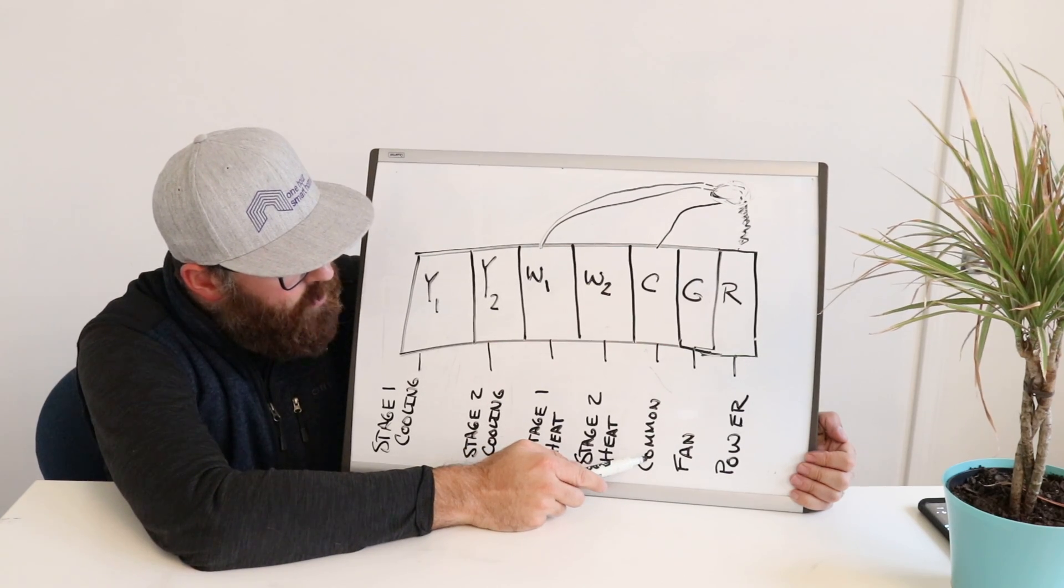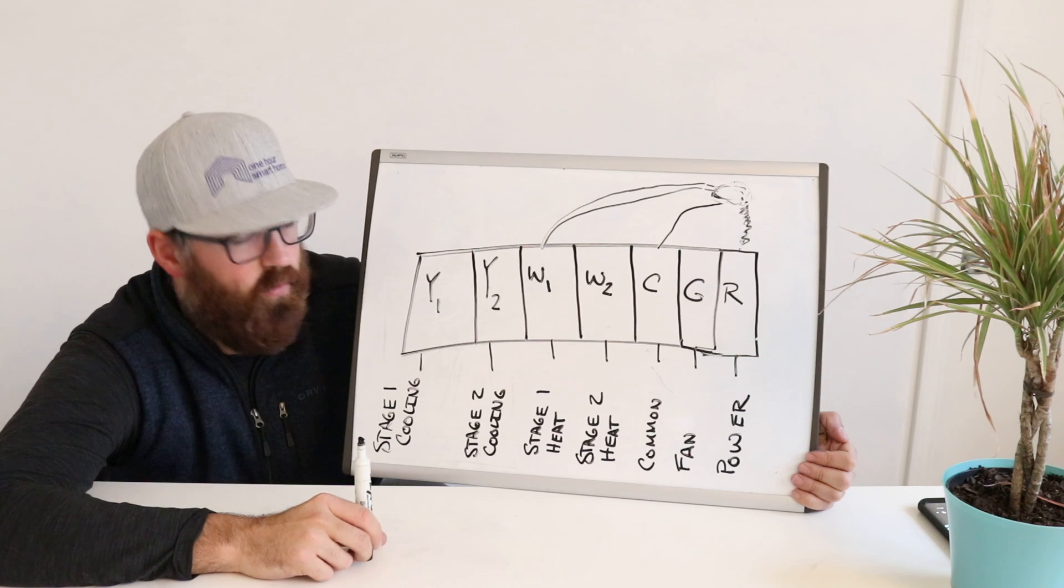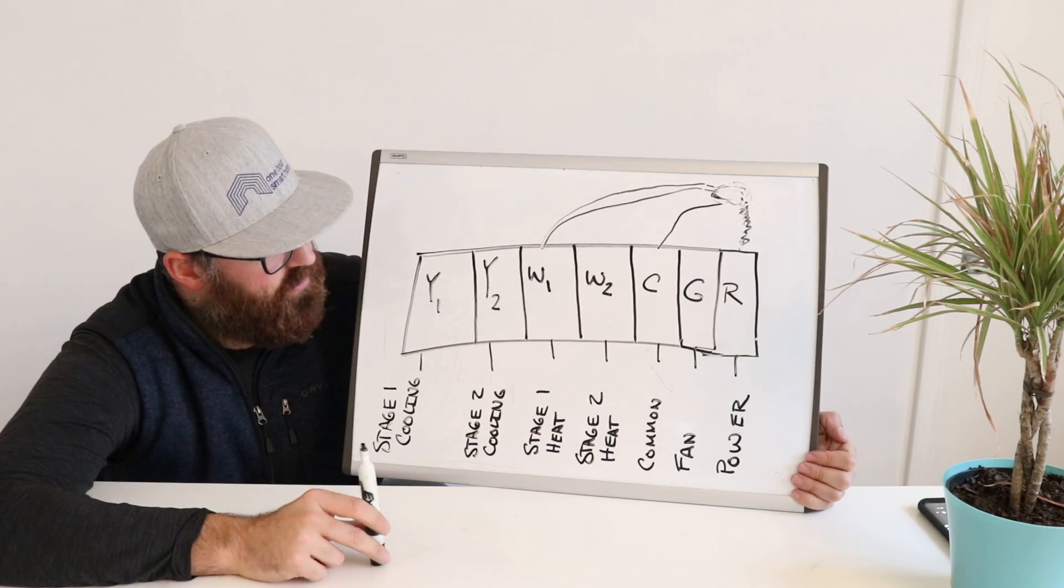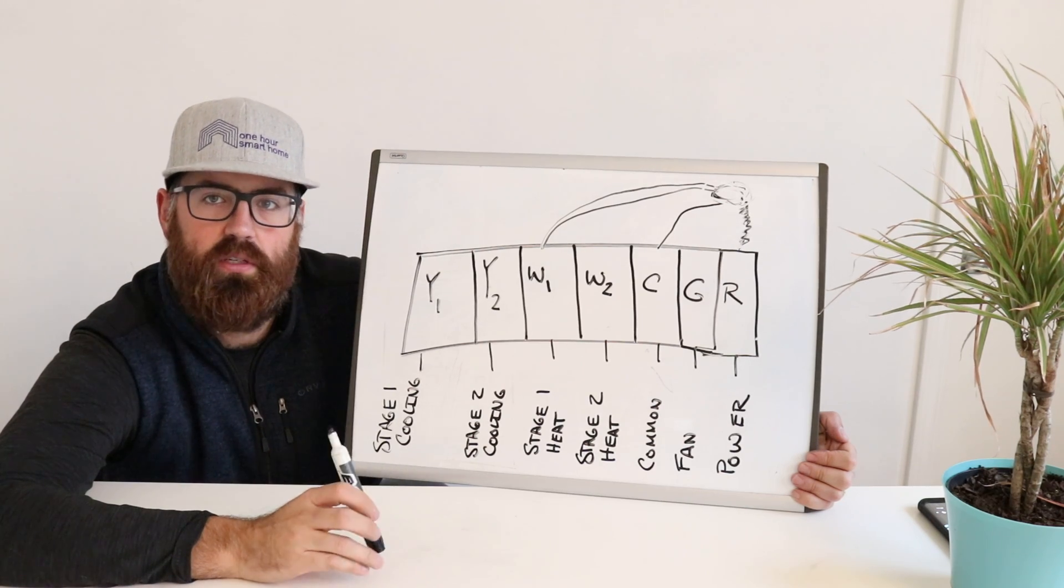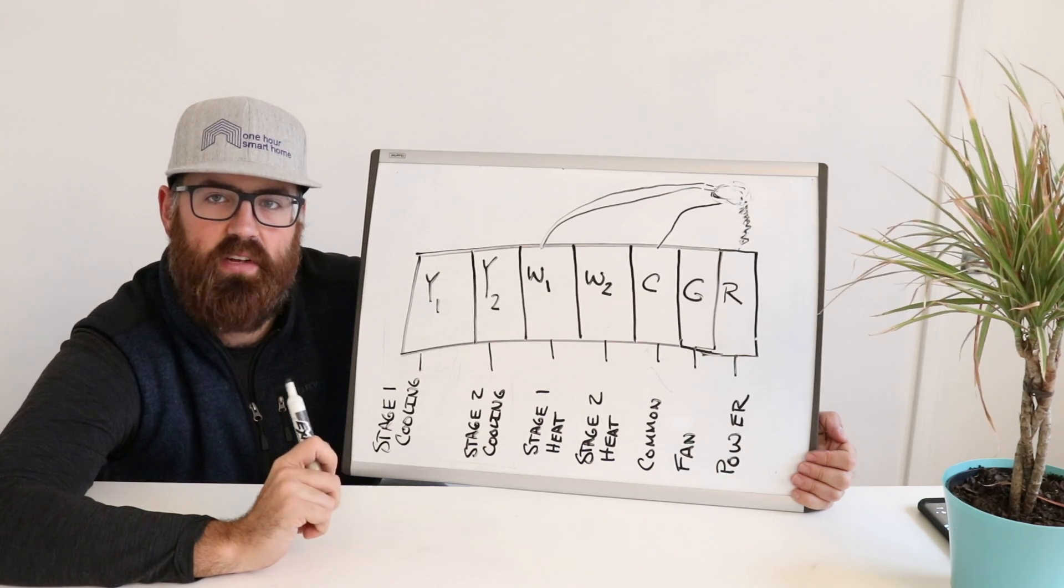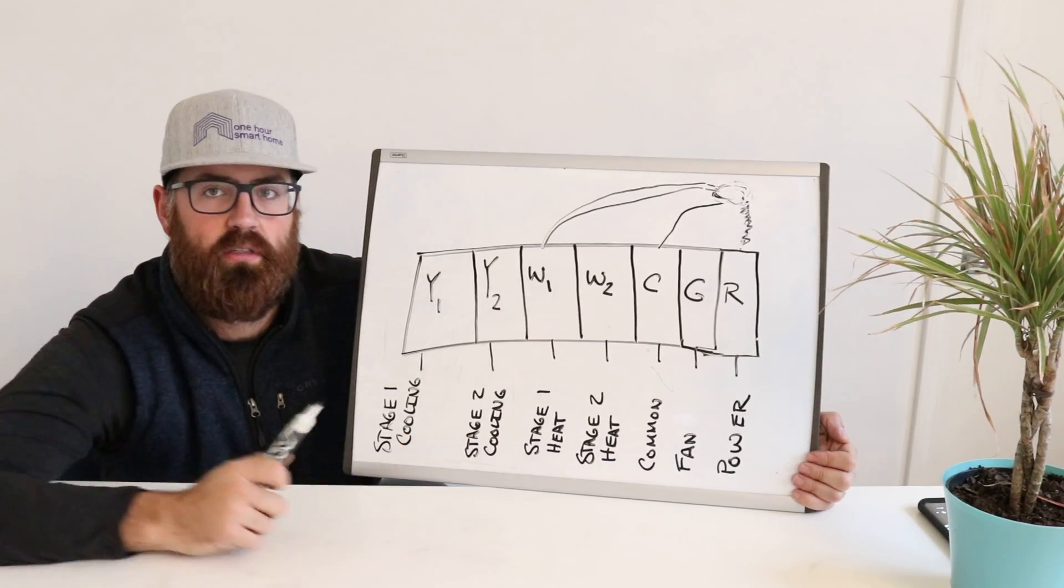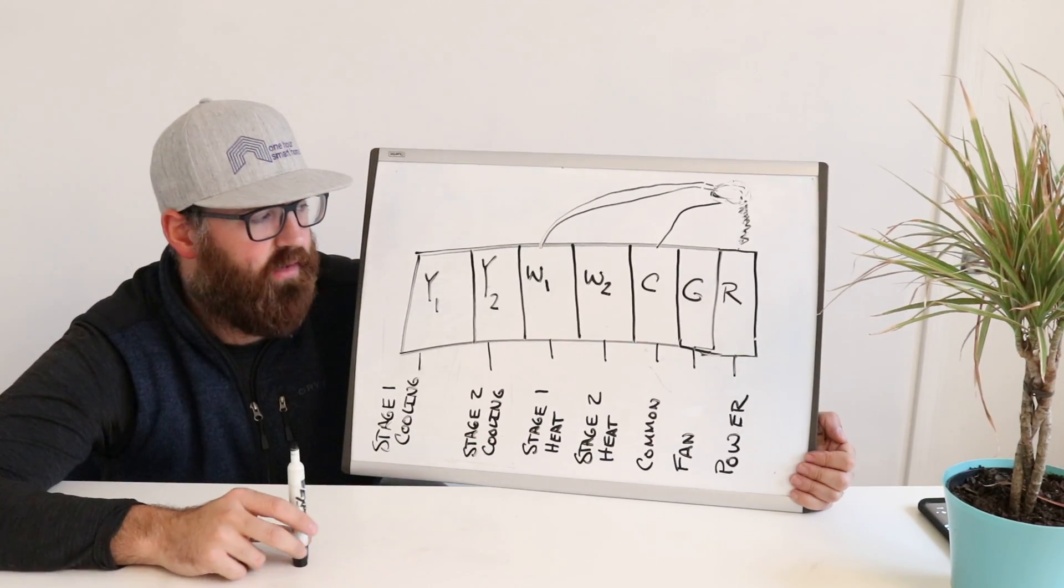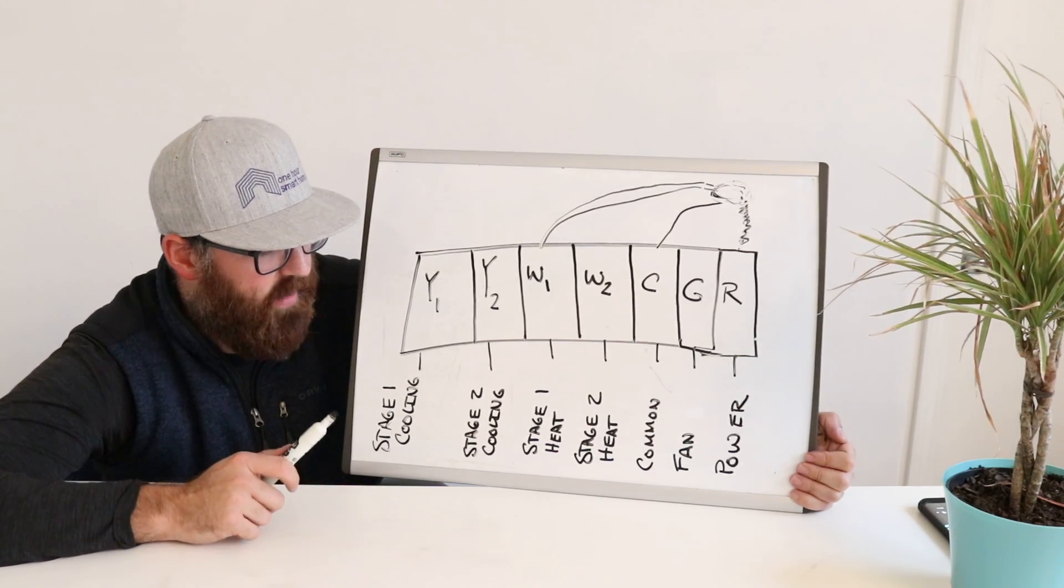So you've got your common wire, and the next thing that you have is a fan wire, G. So the G wire is for your fan, and basically what that allows you to do is control the fan inside your HVAC system independently without any heating or cooling. So if you just want to blow air around in your house in those moderate times of the year, you can absolutely do that with the G wire.